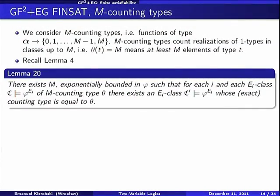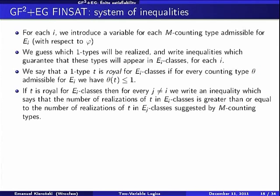Now, how do we construct the system, this time of inequalities? We introduce variables for M-counting types which are admissible for E_i. The number of M-counting types is doubly exponential in the size of formula phi. Our procedure will be: guess the set of one-types which will be realized in the model of the given formula phi, and try to set some inequalities. There will be two kinds of inequalities.